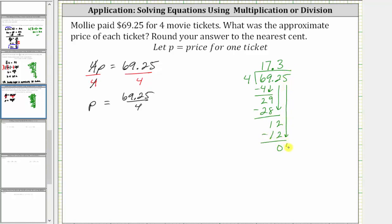Bring down the next digit. Determine how many fours in five, which is one. One times four is four. Subtract, the difference is one.